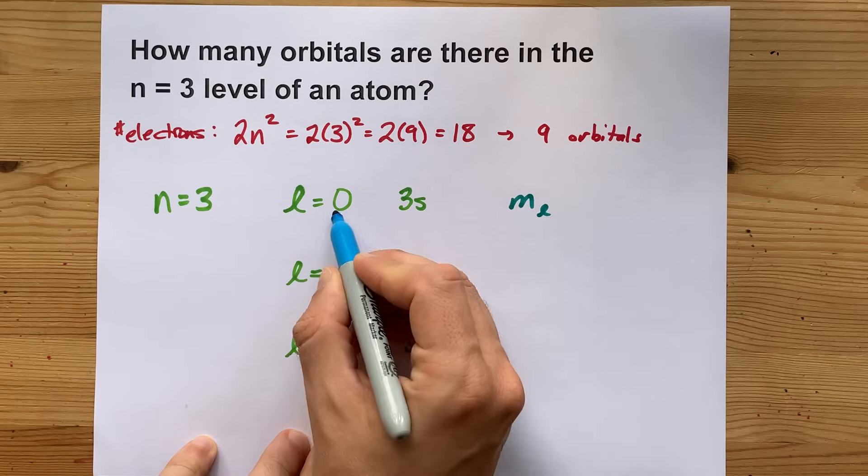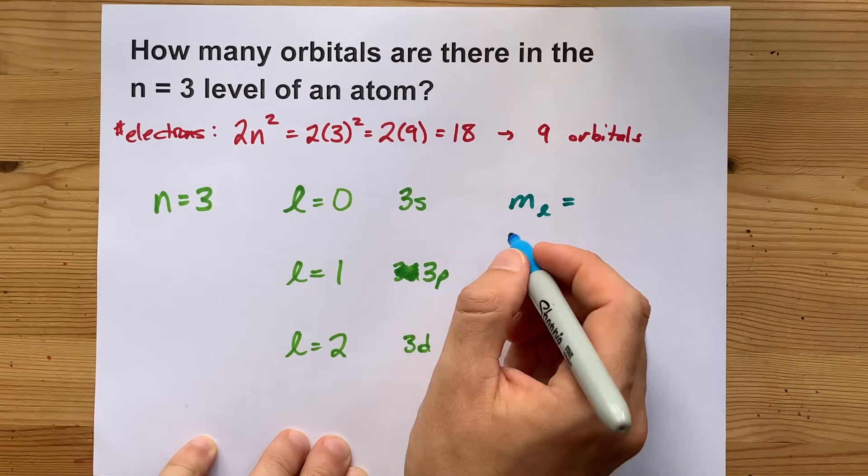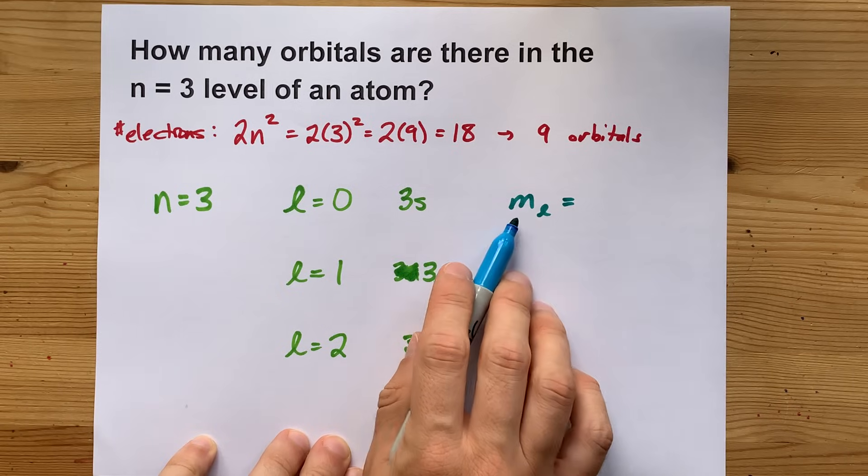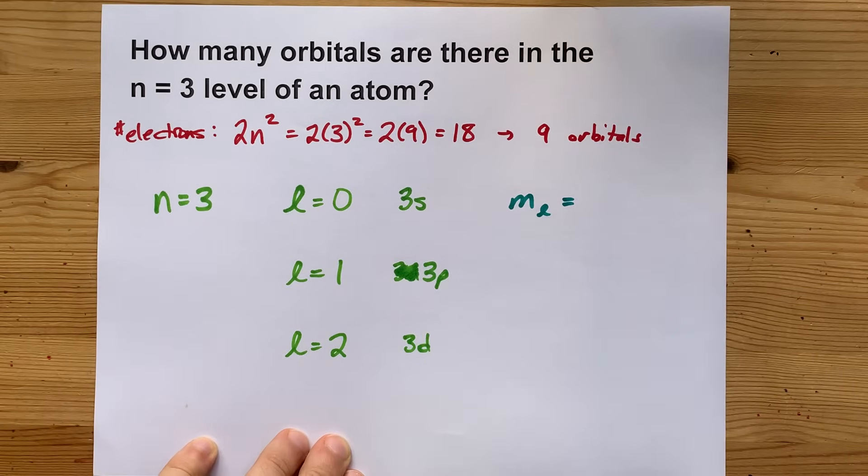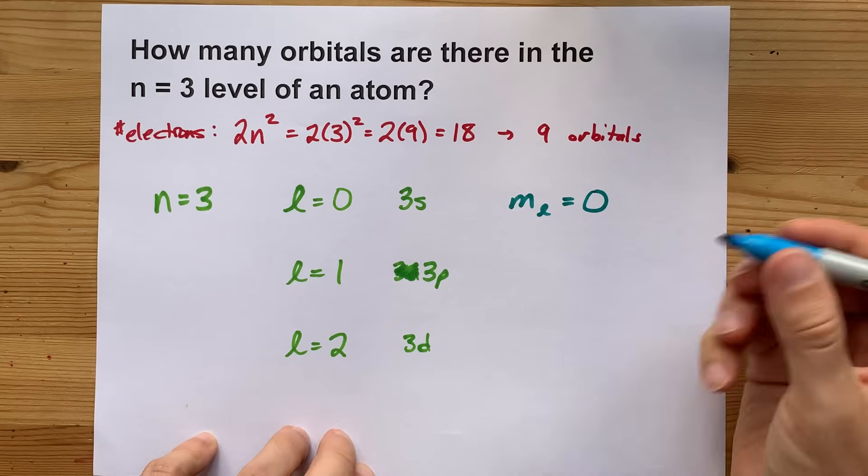When L is 0, your job is to count from negative 0 to positive 0. The value of ML is always negative L to positive L. Anyways, negative 0 and positive 0 are both 0.